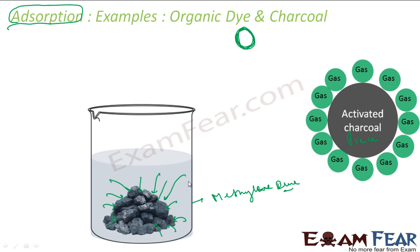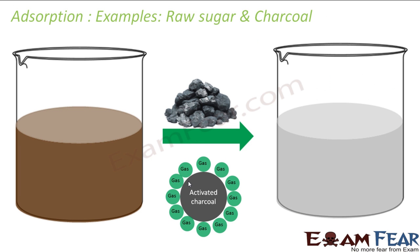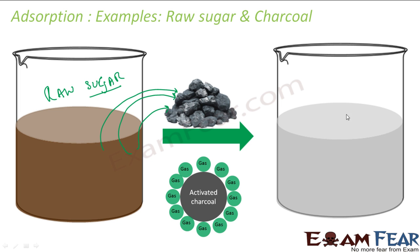Another good example of adsorption is raw sugar. Raw sugar obtained from sugarcane is brownish in color, whereas the sugar we eat is white. When an aqueous solution of raw sugar is passed over charcoal, the charcoal adsorbs all the coloring matter, and the sugar becomes white. This is called refined sugar — it is more pure. Since adsorption is a surface phenomenon, the solution is passed over charcoal, not through it.